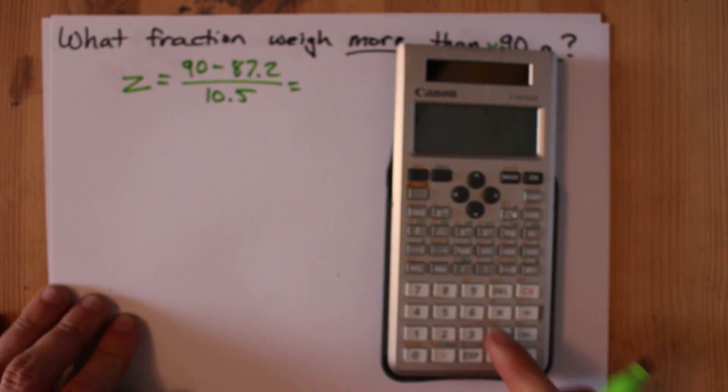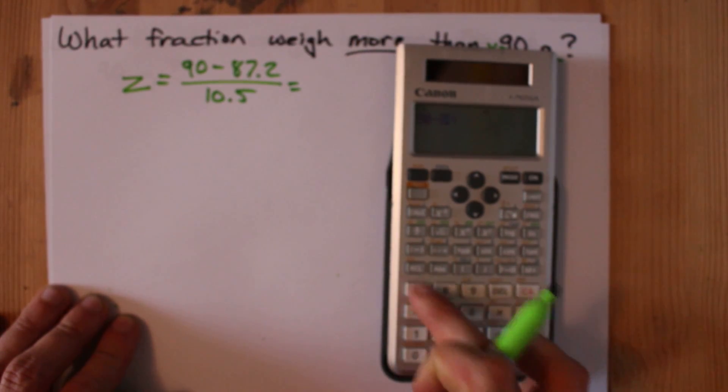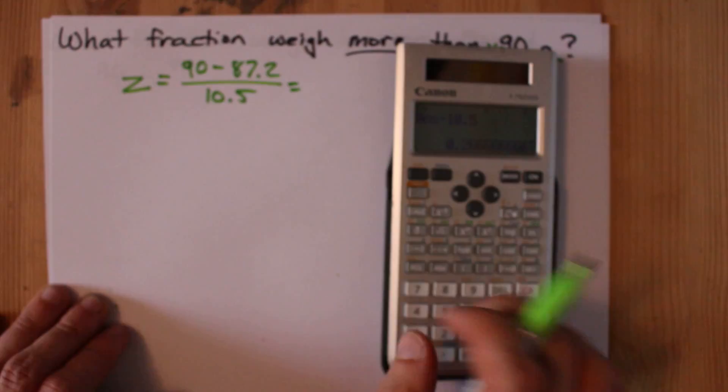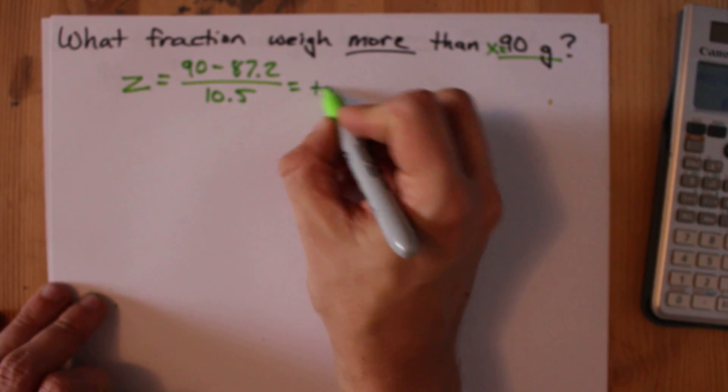I can do all this at once on the calculator. 90 minus 87.2, then divided by 10.5. I get 0.27, and it's positive.